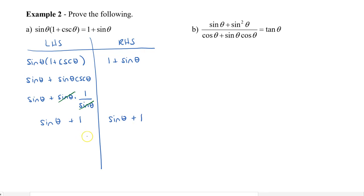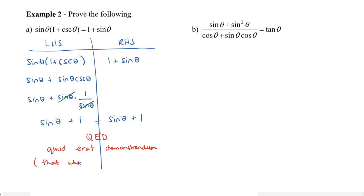Sometimes you might have seen that people write equals or even Q.E.D. Q.E.D. is a Latin abbreviation for 'quod erat demonstrandum', which means 'that which was to be demonstrated'. What we want to demonstrate in this case was that the left side was equal to the right side, and we demonstrated that. So Q.E.D.